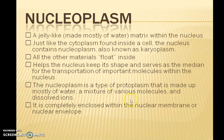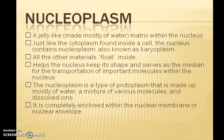Coming to the nucleoplasm — it is a jelly-like matrix inside the nucleus, also called karyoplasm. It helps the nucleus keep its shape and serves as the medium for the transportation of important molecules. It is like a protoplasm, made up of water, a mixture of various molecules and dissolved ions — similar to the cytoplasm, it is a fluid-like matrix.